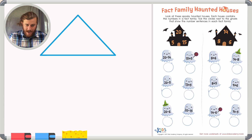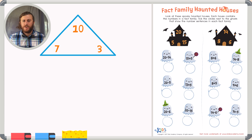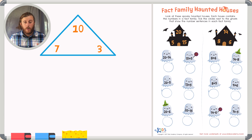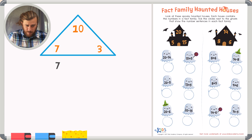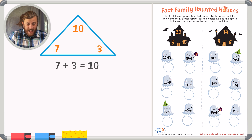In this example fact family, we're going to have the numbers 10, 7, and 3. The way a fact family works is that the numbers inside the fact family either add or subtract to equal one another. For example, 7 plus 3 — our two bottom numbers — add together to equal 10. And we could flip that fact: 3 plus 7 also adds together to equal 10.